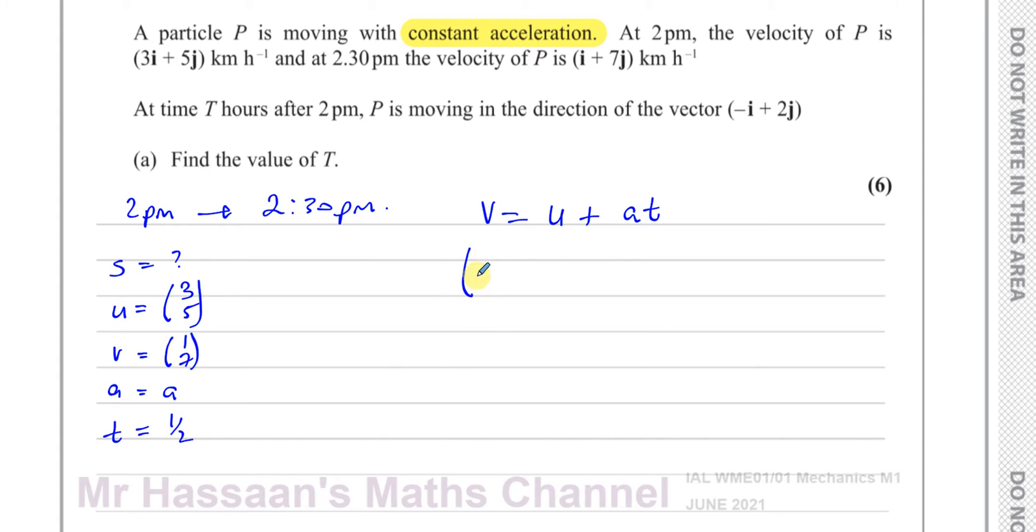So we've got V, which is 1, 7, equals U, which is 3, 5, plus A times 0.5. If I subtract these two vectors, 1, 7 minus 3, 5 equals A over 2. This gives you 1 minus 3 is negative 2, 7 minus 5 is 2, equals A over 2. So I multiply both sides by 2, therefore the acceleration is negative 4 and 4. So we know the constant acceleration.